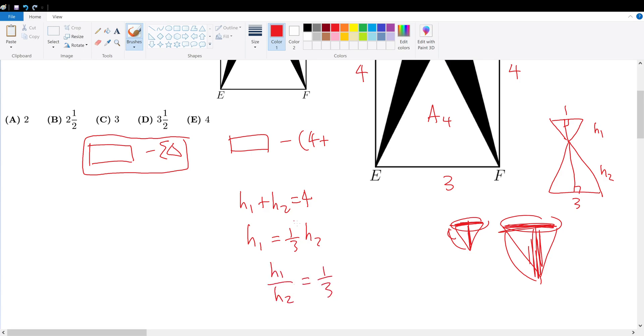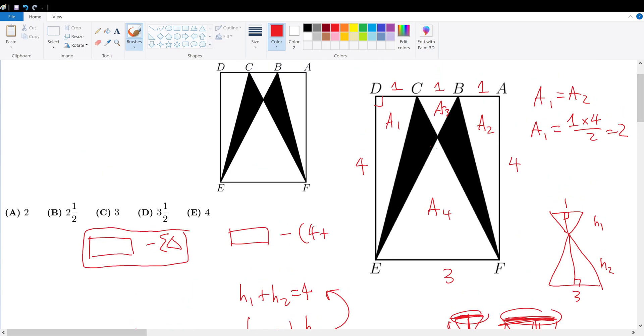So if that were to be the case, we can substitute this into this equation to get what? We get 4 over 3 H2 is equal to 4. So what is H2? H2 is equal to 4 times 3 over 4, which means the height of this is equal to 3. So if I scroll up, what we know here now is that this altitude is equal to 3. If that's 3, then obviously this altitude is 1.